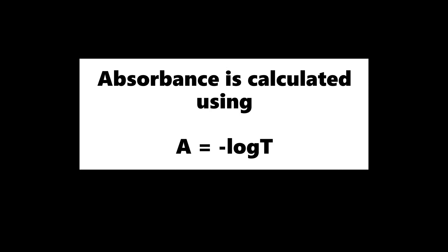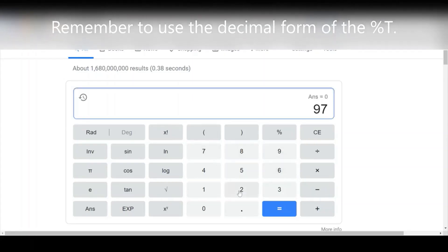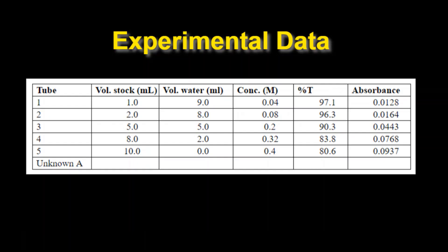Using the transmittance you can calculate absorbance using the equation A is equal to the negative log of the transmittance. If we look at an example it's important to remember that we need to use the decimal form of the percent transmittance. Using 0.971 we can calculate the absorbance and that will work out to be 0.0128 for the first sample.